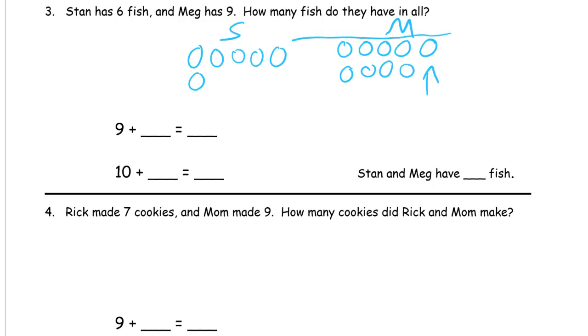One more, we just loop this one in here. Then we have nine. Meg's nine and Stan's one more makes ten, but Stan still has five. So ten and five, fifteen. They have 15 fish.